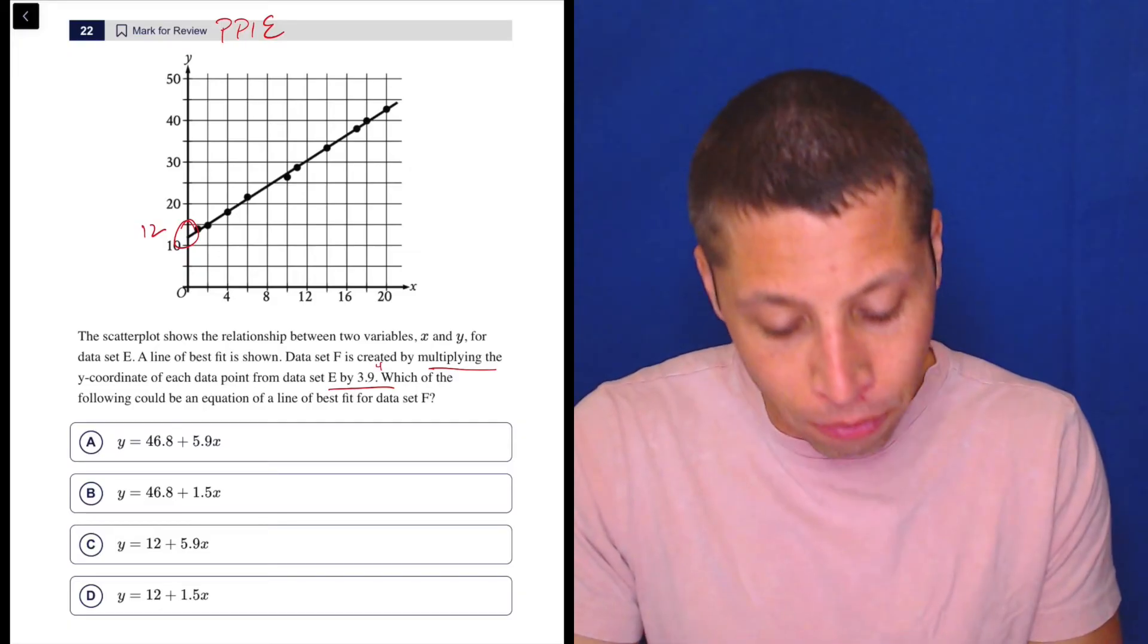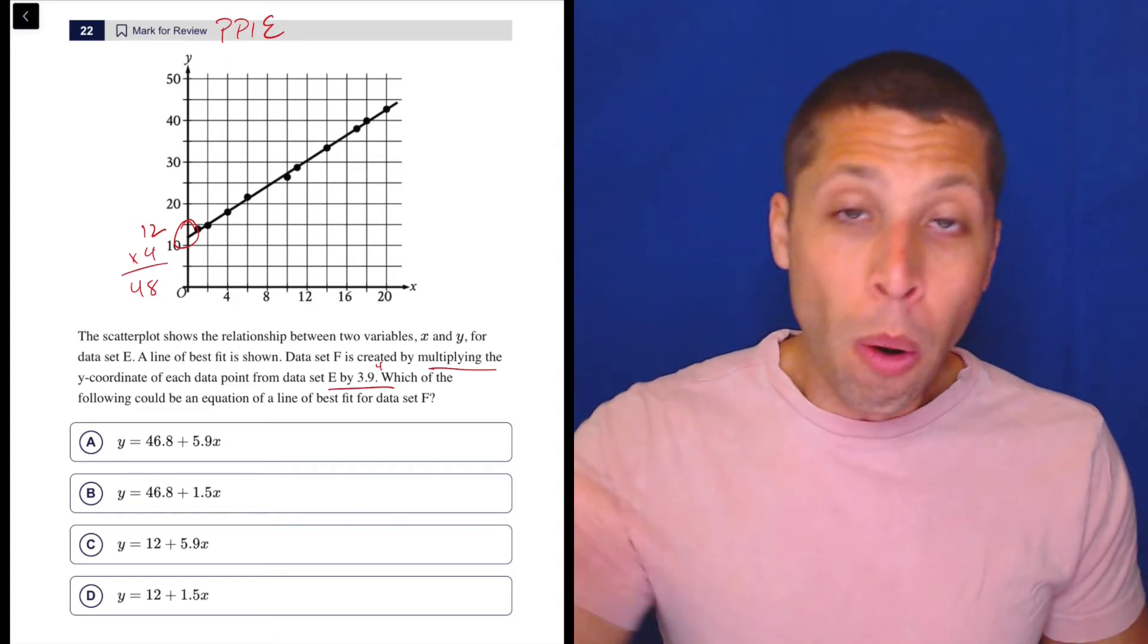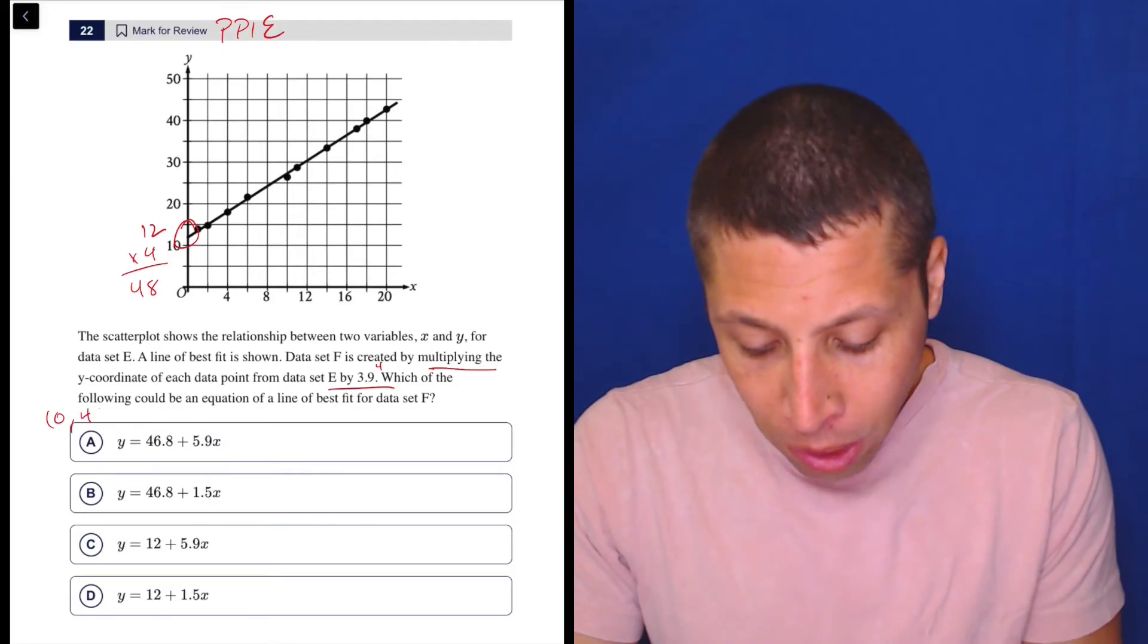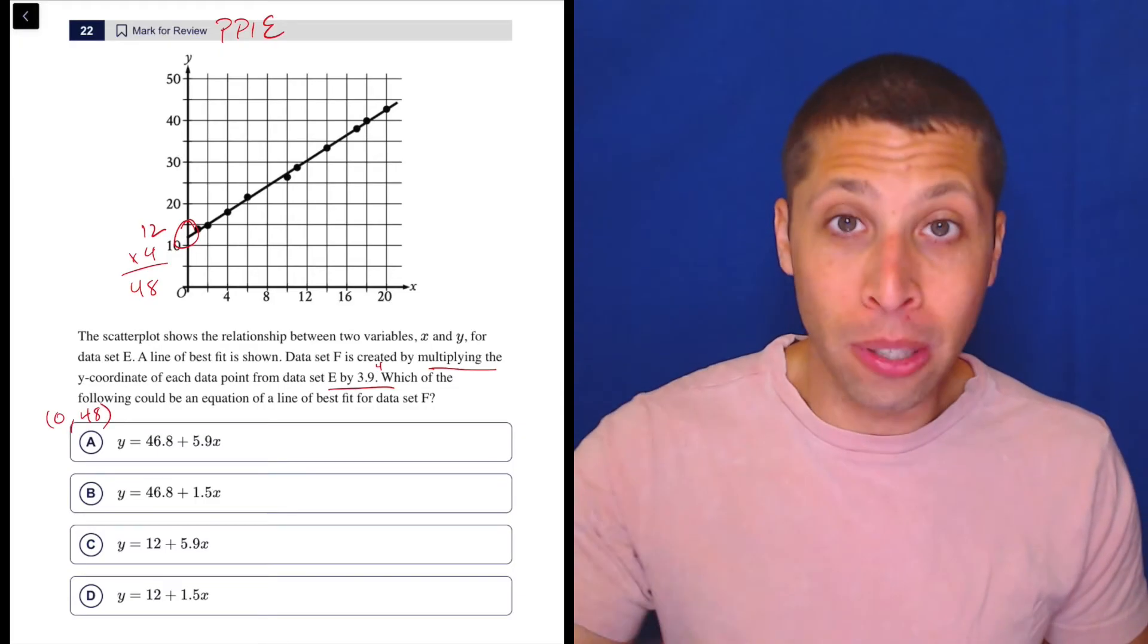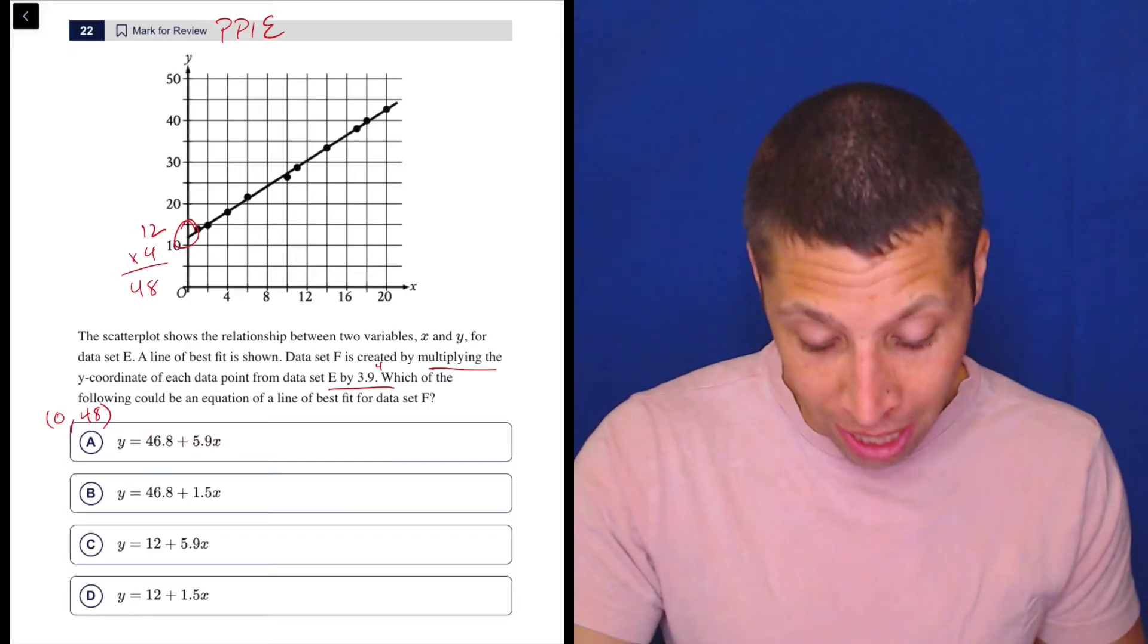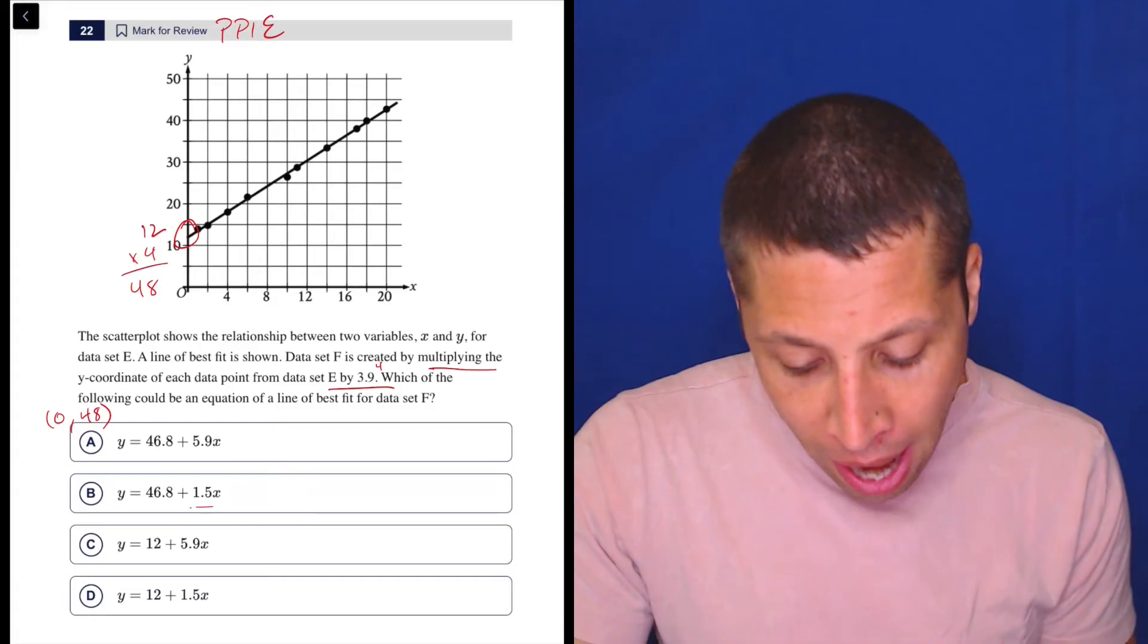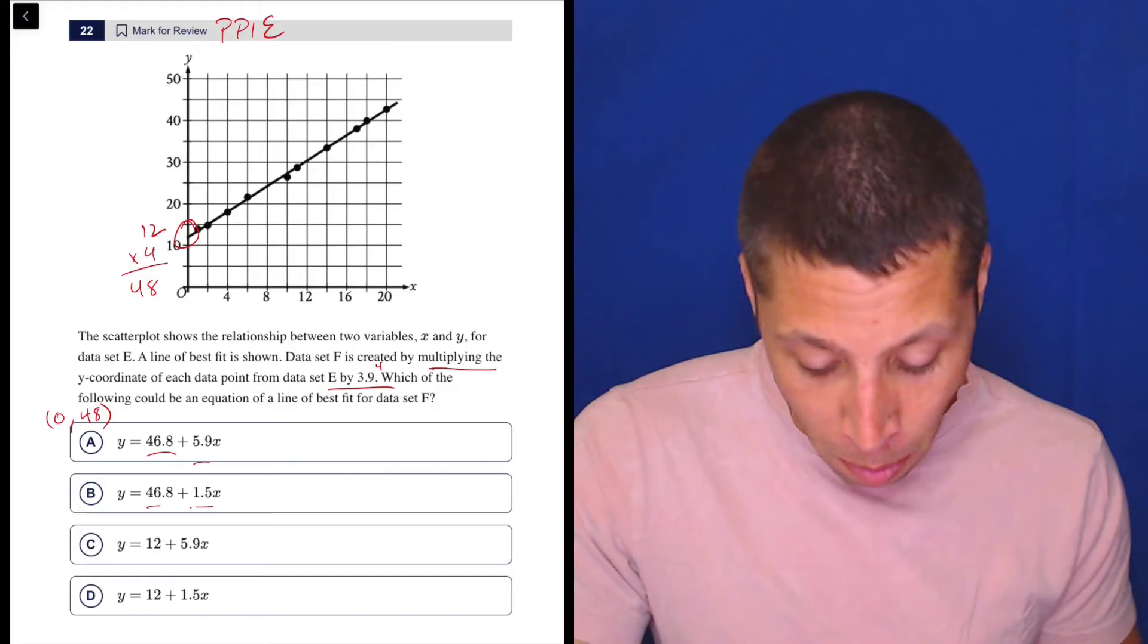So what we're looking for is what happens when we plug the point 0, 48 into all of these equations. Or a better way to look at it, I'm going to put 0 in and I want to get close to 48. Well, if I put 0 in for A and B, it's going to knock out these X parts and I'm going to be left with 46.8. Close enough for now that I'll keep them in.